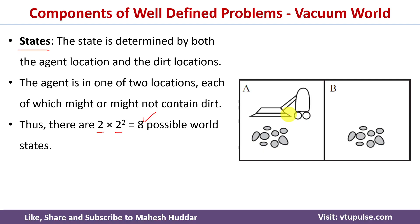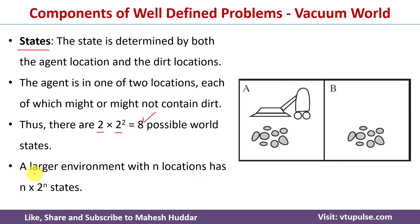This means the problem can exist in any of eight states. For a general environment with n locations, the number of states is determined by the equation: n multiplied by 2 raised to n, where n is the number of locations and 2 raised to n represents the dirty/clean combinations. Now we will list out all eight possible states.